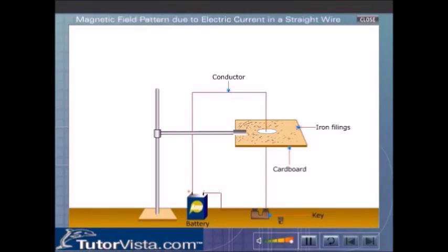Now switch on the current. What do you observe? The iron filings arrange themselves in concentric circles around the conductor. This is because the electric current produces a magnetic field around the conductor and the iron filings being magnetic in nature align themselves in concentric circles.